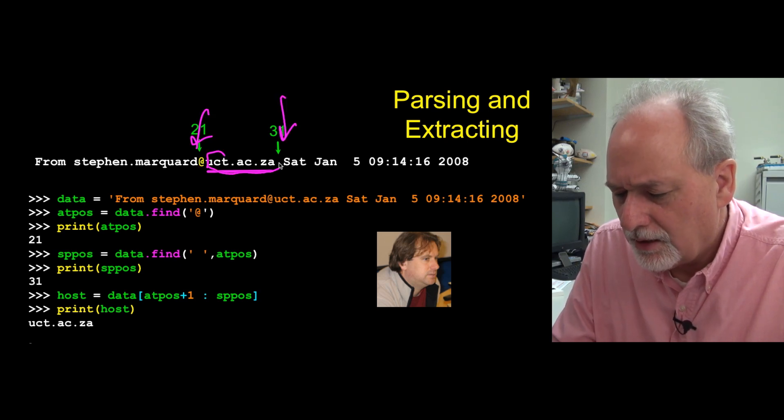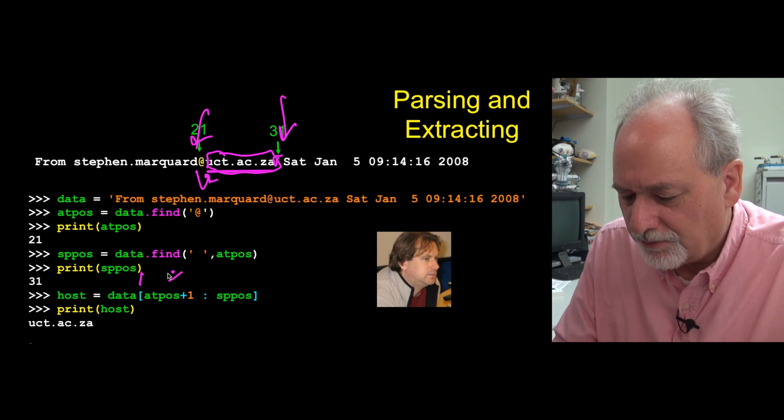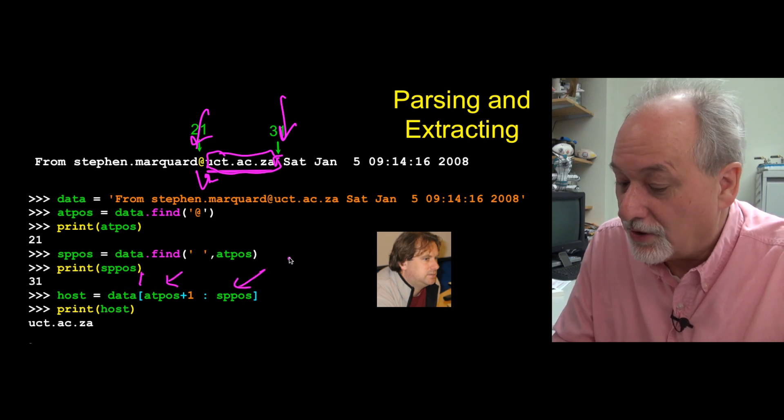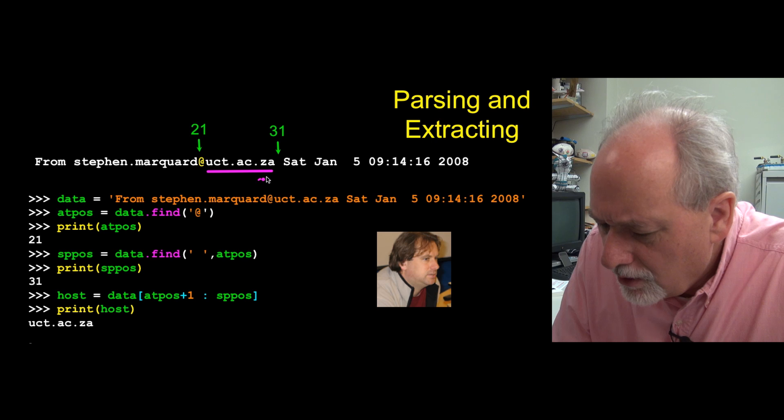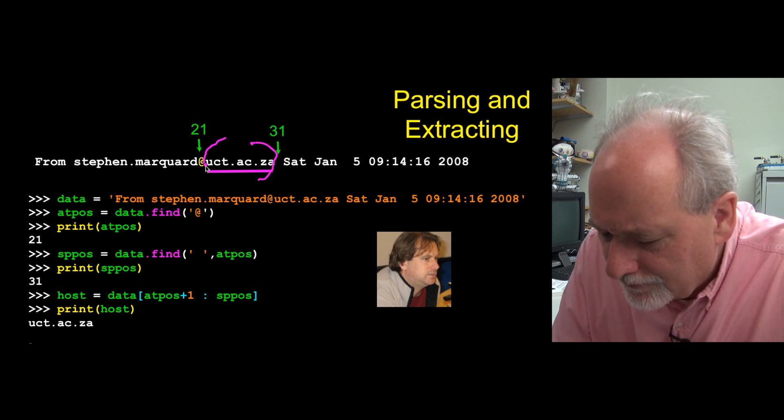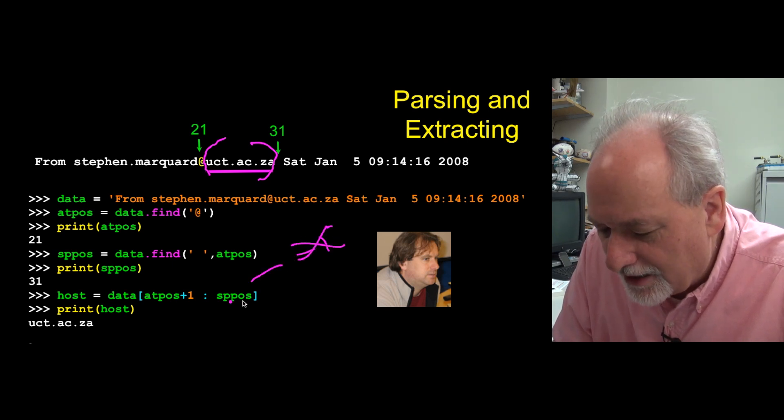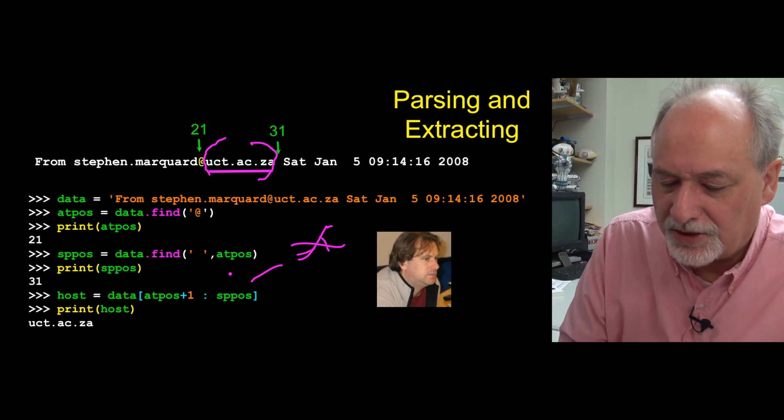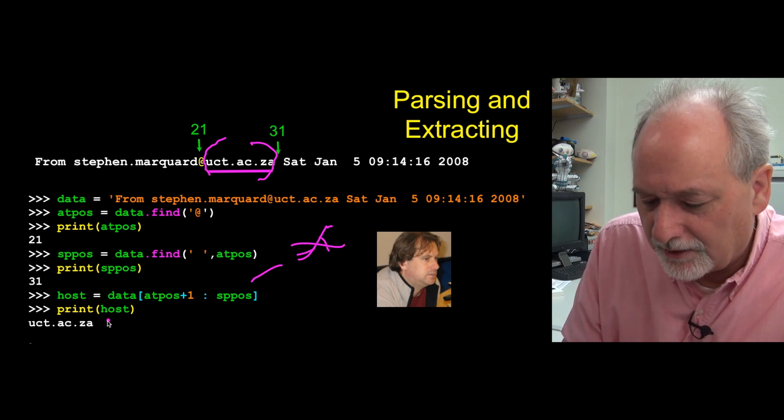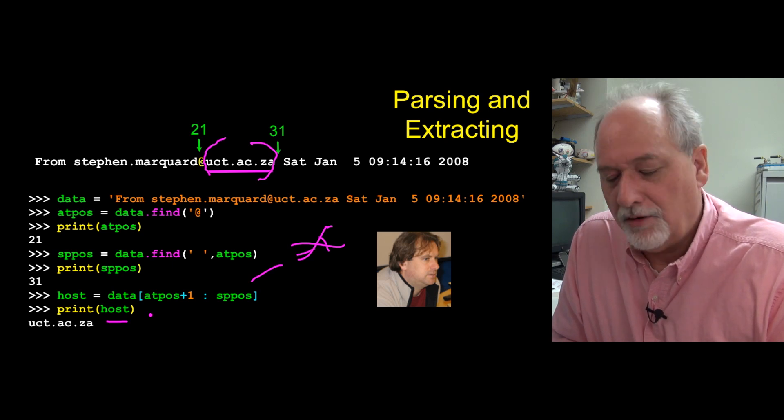Now what we really want is this bit right here. We have to go one beyond the at sign, and we don't want the space. So we're going to use slicing here - data sub at position plus one, up to but not including the space. Oh, smiley face, because we didn't have to say space minus one, because that is up to but not including. We get that little bit right there. We don't have to say minus one there because this is not actually included. The thing that's at the position of the space is not included. So that's already a little benefit for the up to but not including. When we print this variable out host, we get exactly just the school that Steven works at.